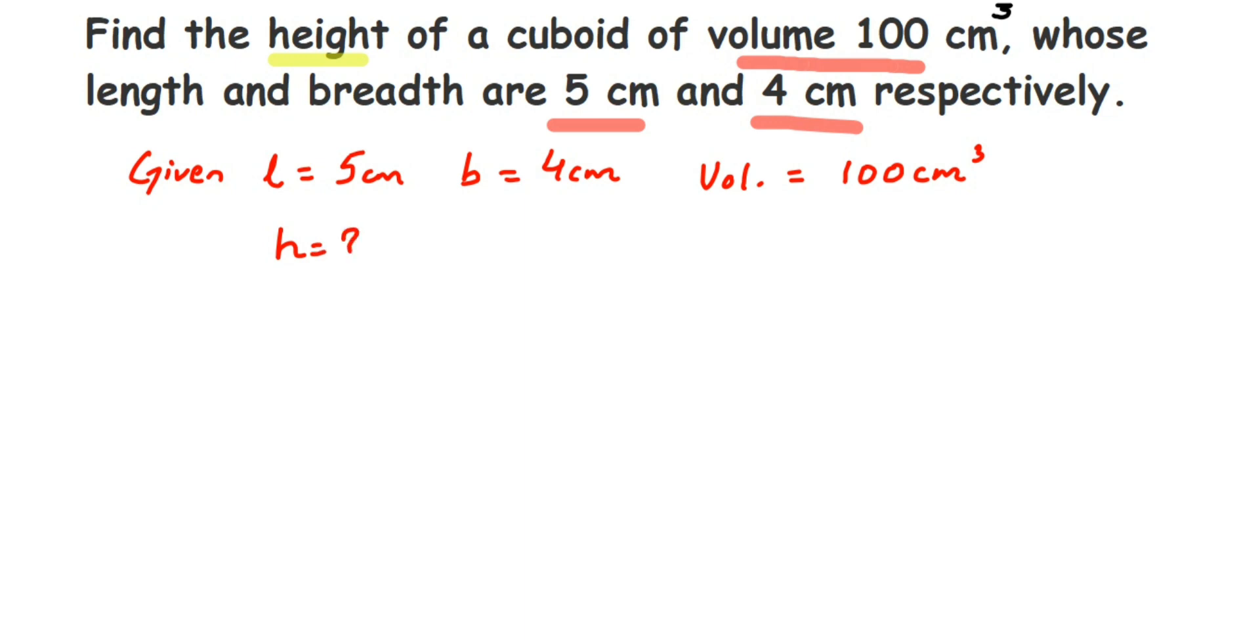Now since we have given the volume, we have to use the volume formula to find out the height. So what is volume of cuboid? Let's write down the formula first. Volume of cuboid is length into breadth into height. We have to just multiply all the three dimensions, that is length, breadth, and height, and that will be the volume. So we can substitute the values now.